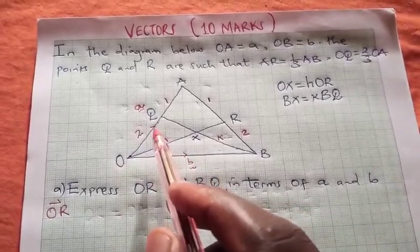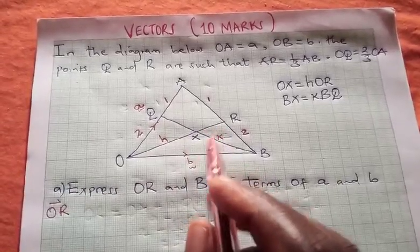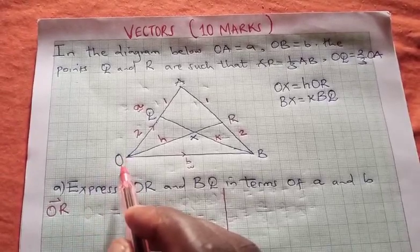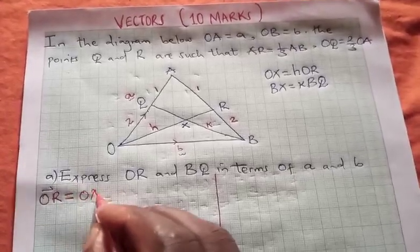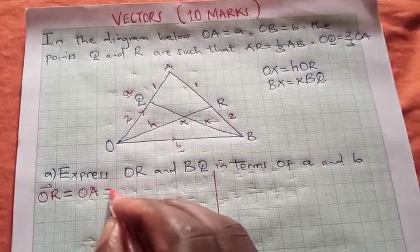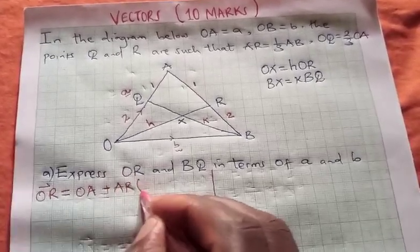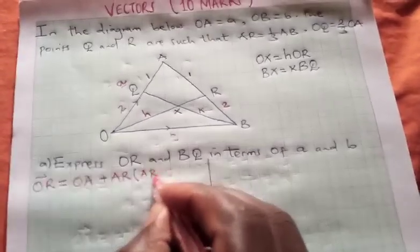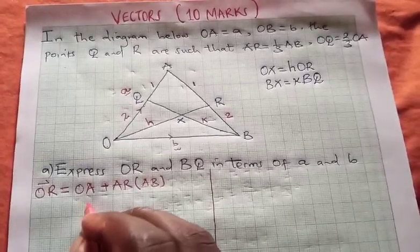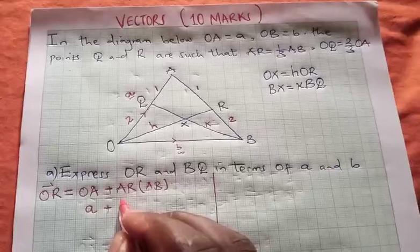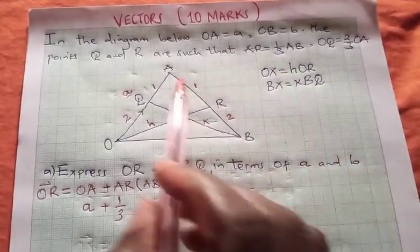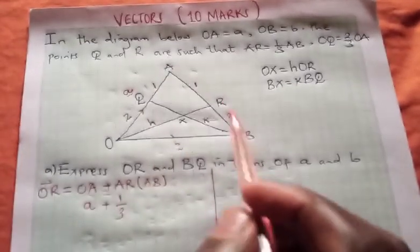Simply because it will help you to use the operation as well. So OR, we are starting from O and we are moving to R. Which direction are we going to use? Let us use OA. So we will say OR is OA plus AR. Now the whole line which is AB. We proceed by saying that OA is given by vector a plus AR, which is in fact a third. AR is now a third of AB.